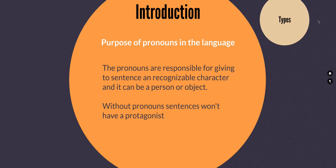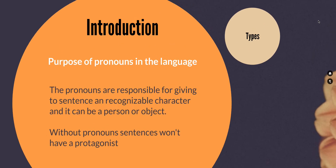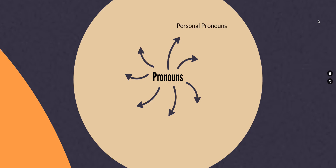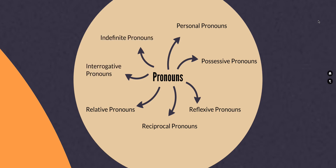Usually if you don't have those pronouns, your sentence won't have sense, or you won't have the protagonist, the main character. We have multiple types of pronouns: personal pronouns, possessive pronouns, reflexive pronouns, reciprocal pronouns, relative pronouns, interrogative pronouns, indefinite pronouns, and so on. But today we are going to be focused just on these three: personal, possessive, and reflexive. You are going to realize that you usually use pronouns in your everyday life, because when you are speaking English, you are using pronouns — you have to.